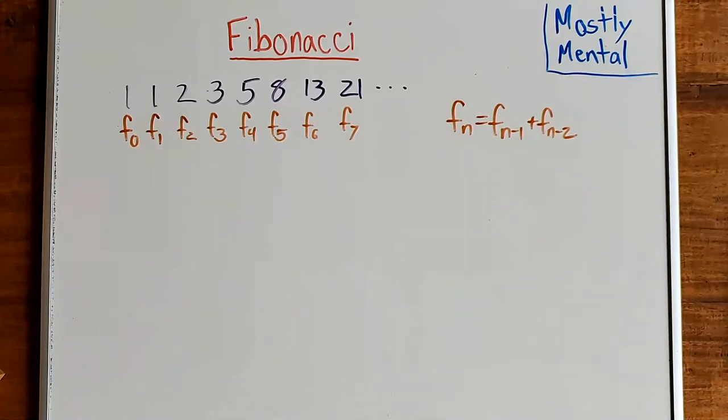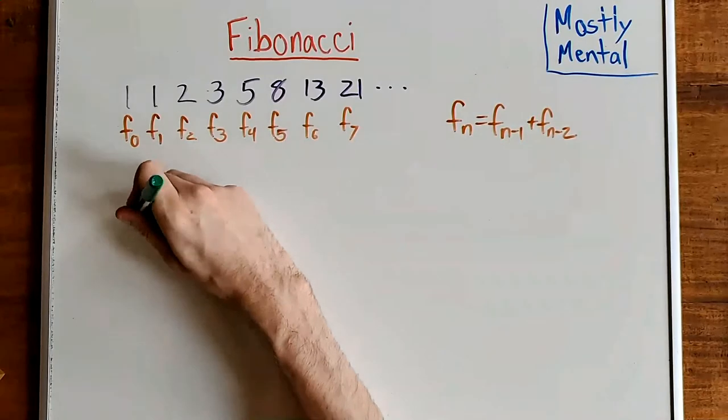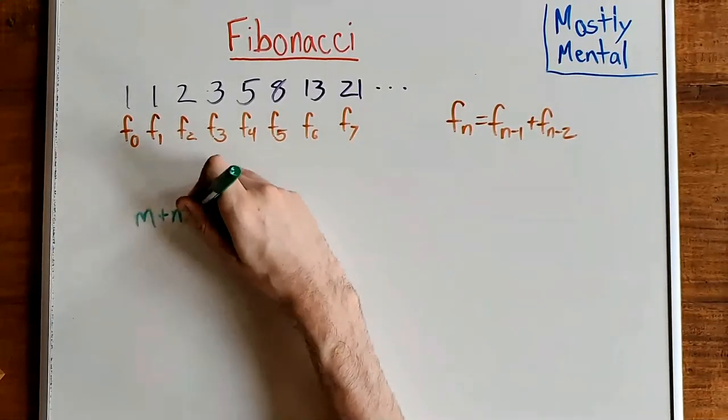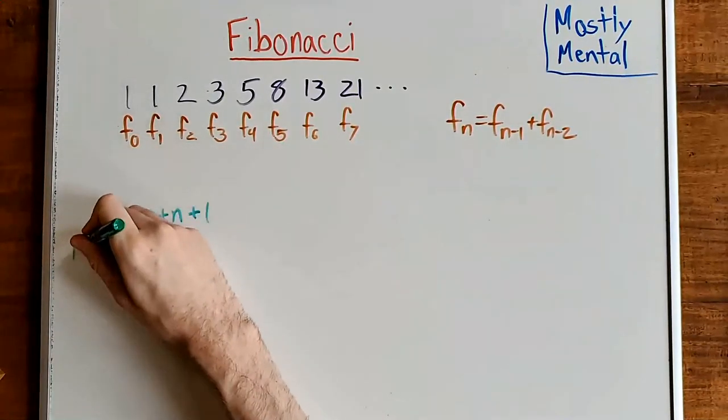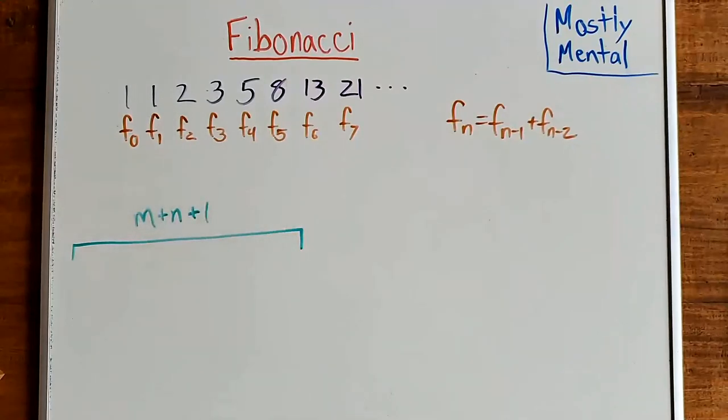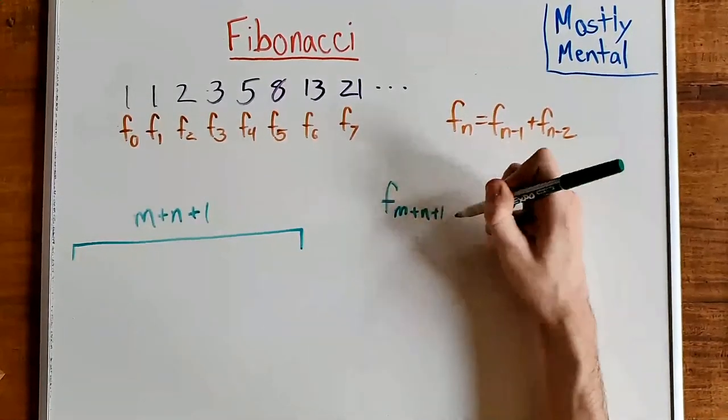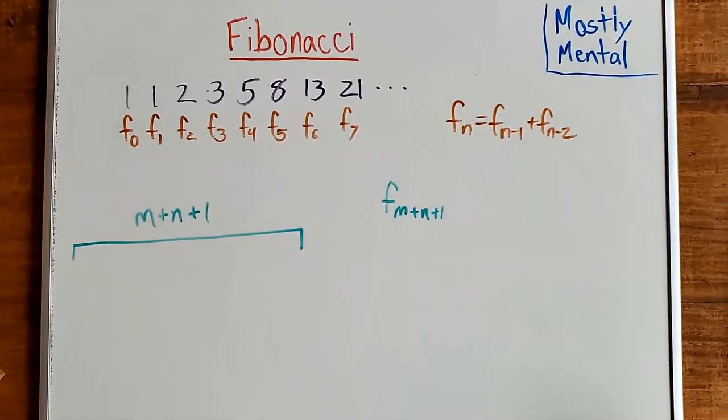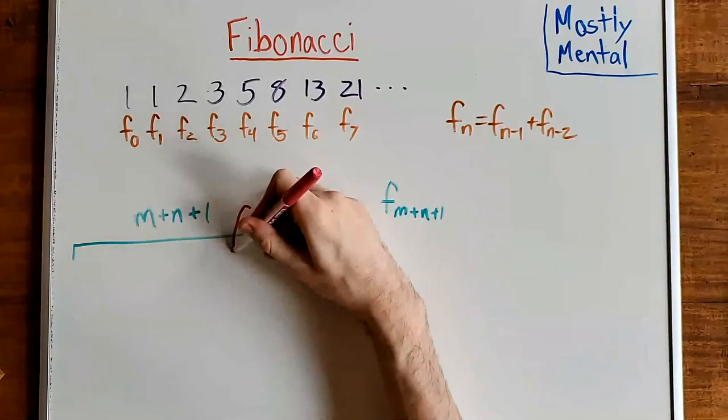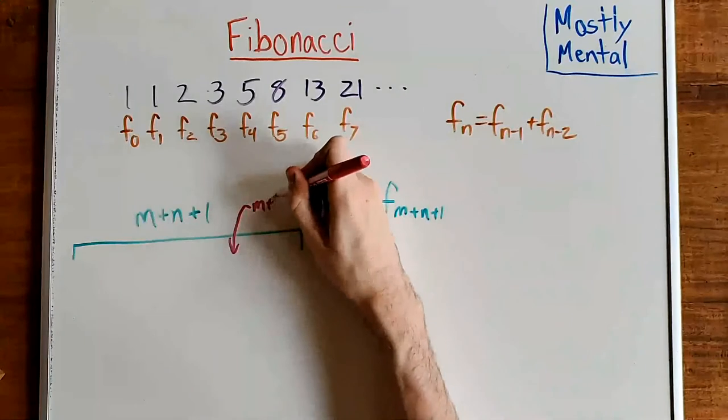One more example, and this time we won't start with the formula. Let's say we have a row of length m plus n plus 1 that we want to tile. How many ways can we do that? Well, once again, it's F sub m plus n plus 1. Okay, now let's consider what tile is in position m plus 1.